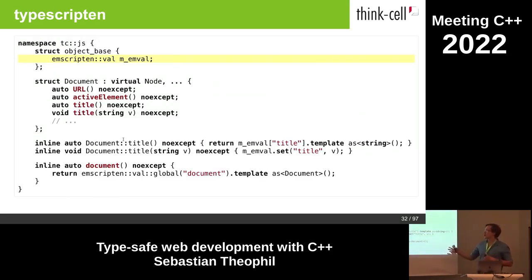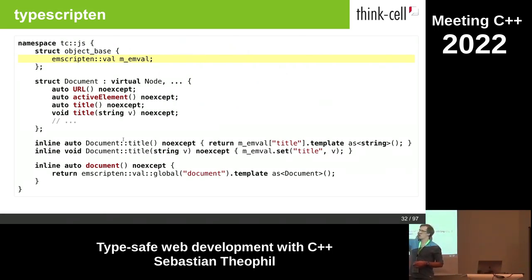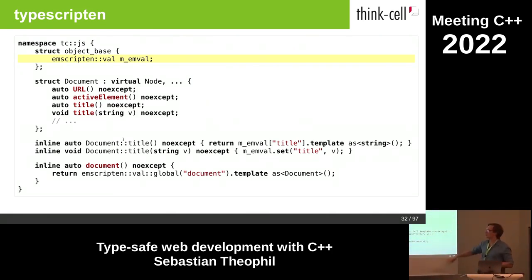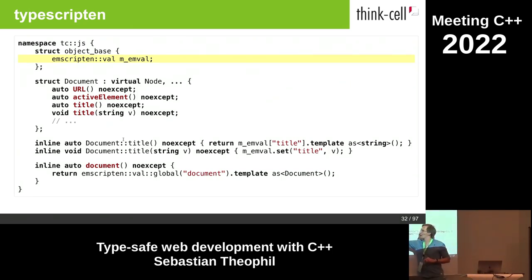The output looks a bit like this. We create a type-safe wrapper around the existing not-type-checked Emscripten API. The output uses everything that Emscripten already offers, and we just create a type-safe wrapper — here for the document title property, taking or returning a string.